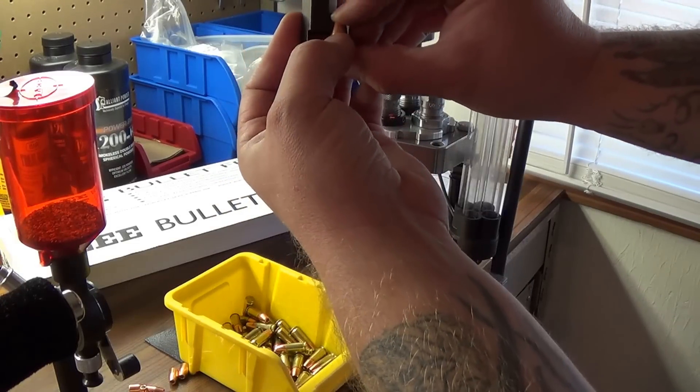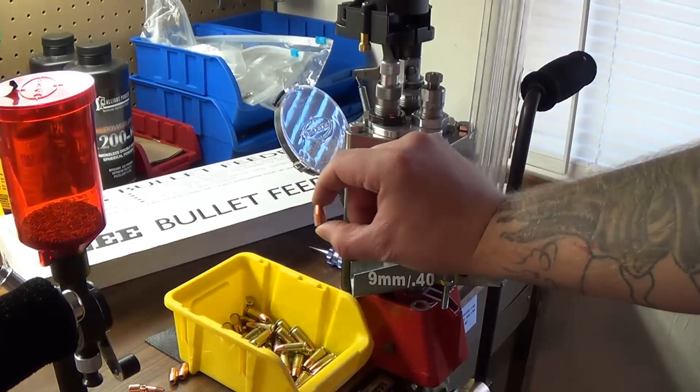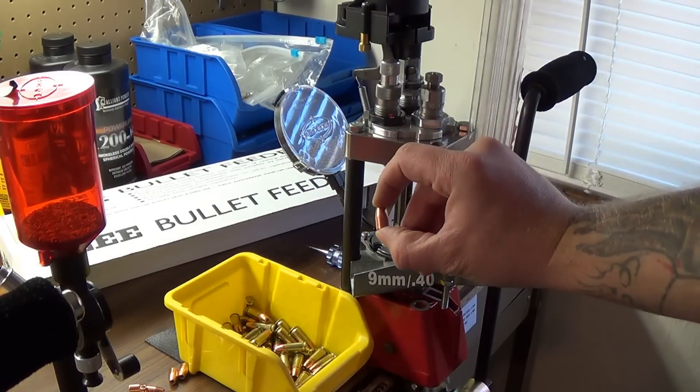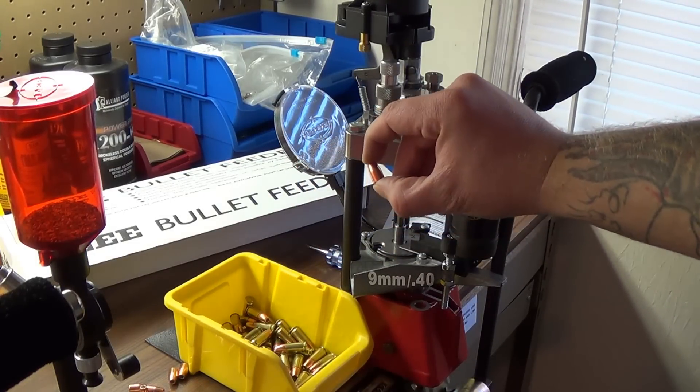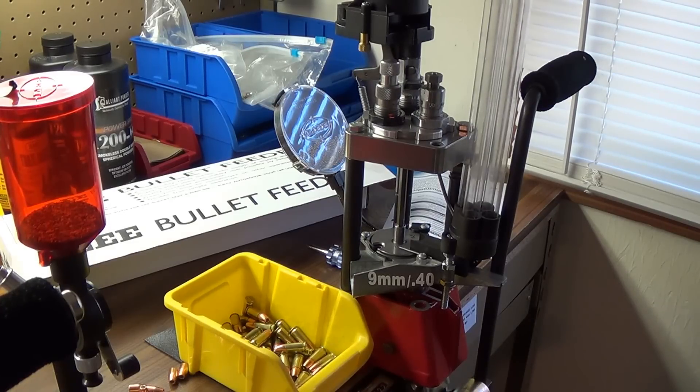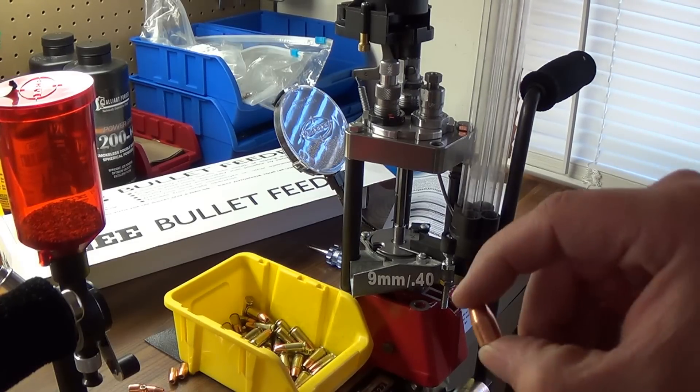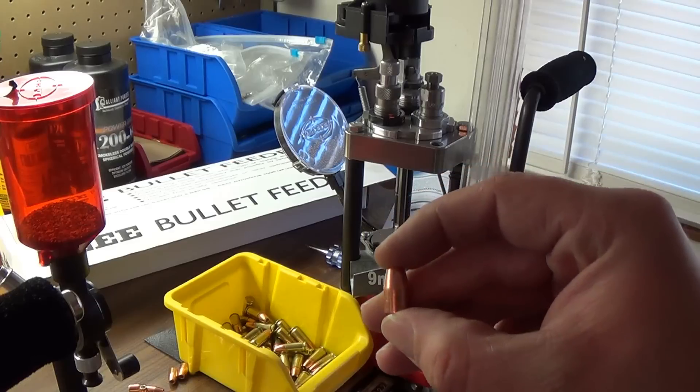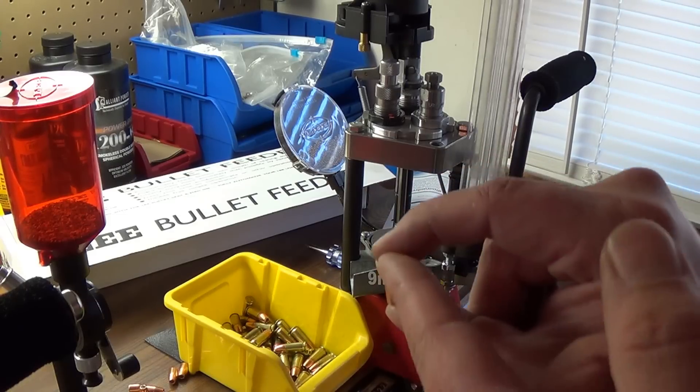Then it feeds it underneath your seating die. If you get the wrong one, what will happen is the bullet will tip or it won't feed, and that's where a lot of the problems come from. Make sure you order the right one. All you need to do is take one of the bullets that you use, take a micrometer and just see how long the bullet is, and then order one that's within that length.